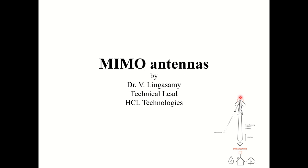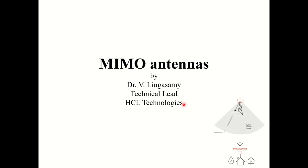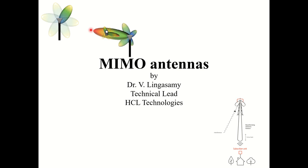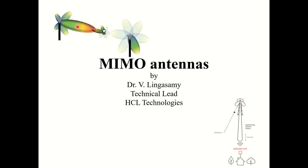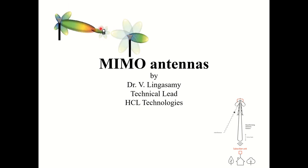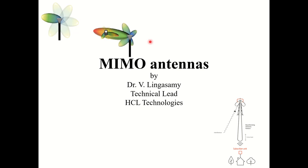With beamforming, a cell tower broadcasts in all directions and a UE captures the beam and communicates with the cellular network. As the UE moves, it hops to the nearby cell site. The system ensures SNR improvement and better performance compared to the traditional broadcast approach.